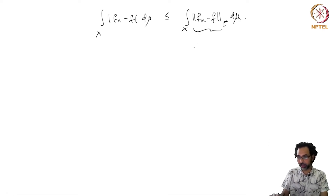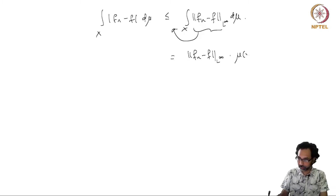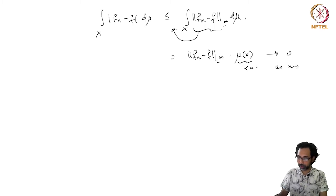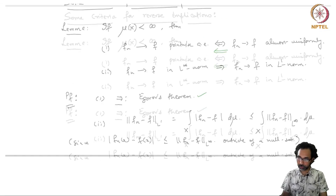This is a constant function over X, so you can take this out of the integral. This is nothing but ‖fn minus f‖_{L∞} times the integral over X of the function 1, which is nothing but the measure of X, and this is finite. So this goes to 0 as n goes to infinity. In the finite measure space setting, we have seen a couple of reverse implications: from pointwise almost everywhere to almost uniform convergence, and from L-infinity norm to L1 norm.